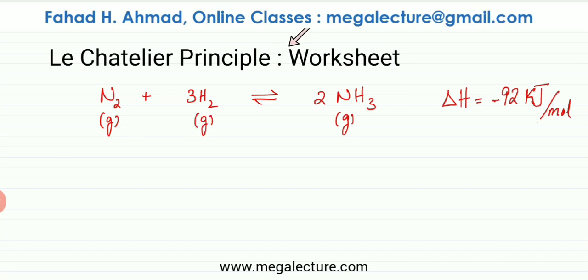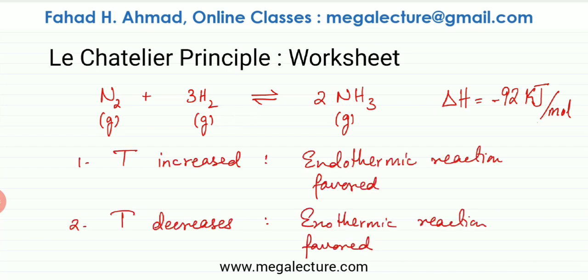Le Chatelier's principle states what effect would happen on the equilibrium if pressure, concentration, or temperature are altered — whether the forward reaction would increase in speed or whether the backward reaction would increase in speed. This is going to be a brief summary; I'm not going to go into a lot of detail, as there are other video lectures where I've gone into more detail.